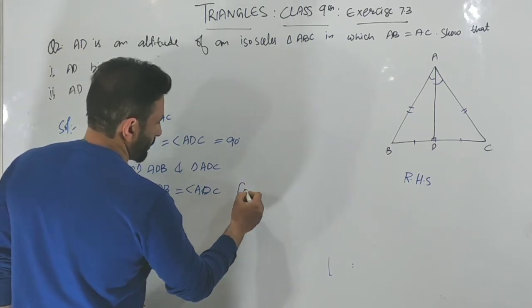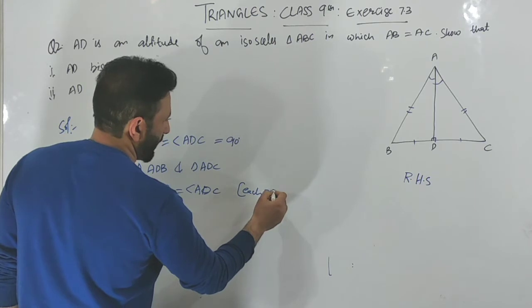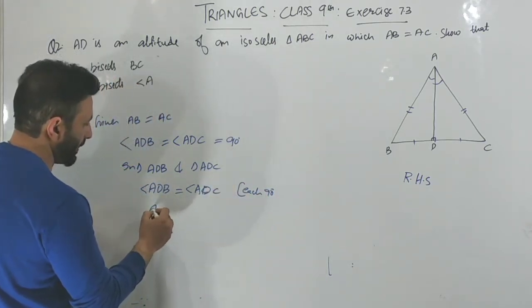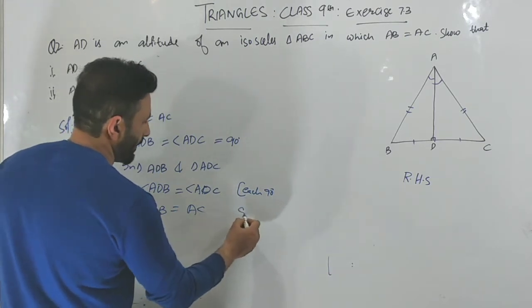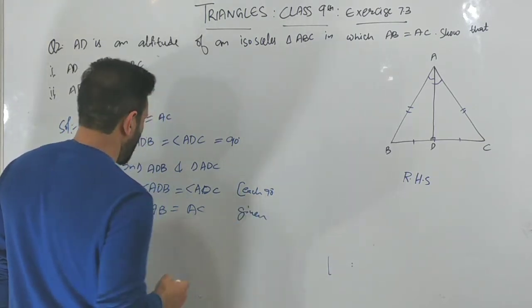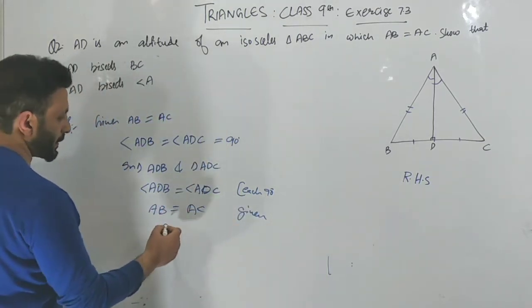Each angle is 90 degrees. So AB is equal to AC, given. AD is equal to AD, common side.